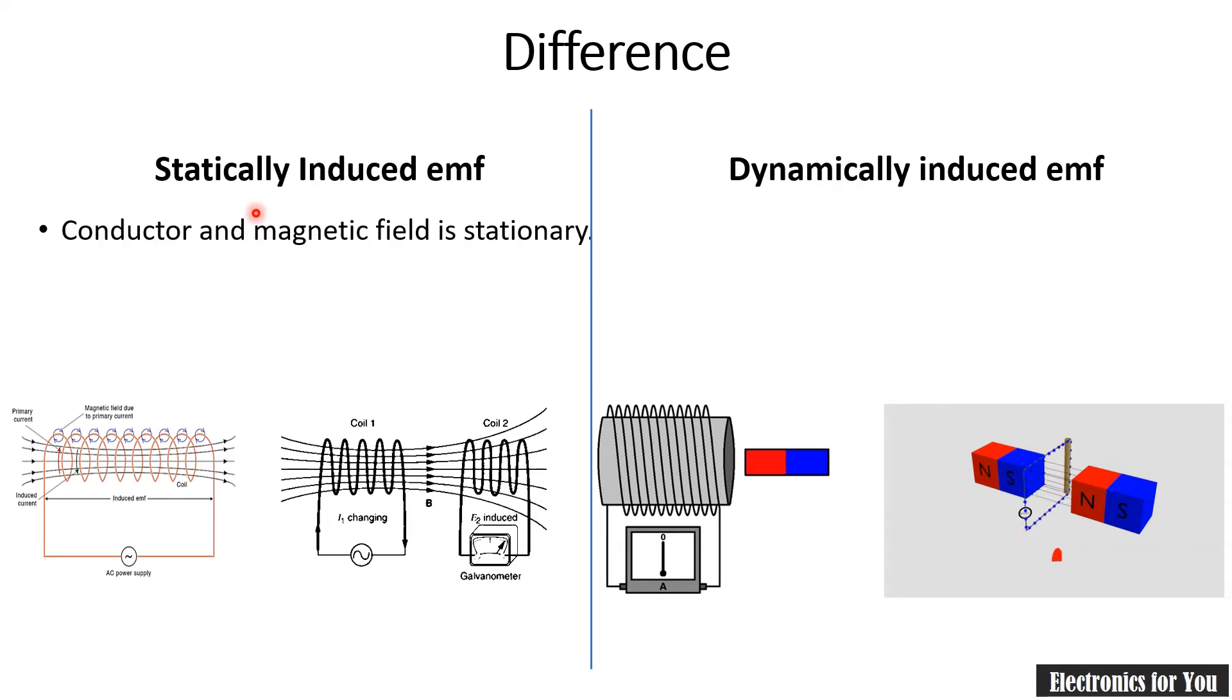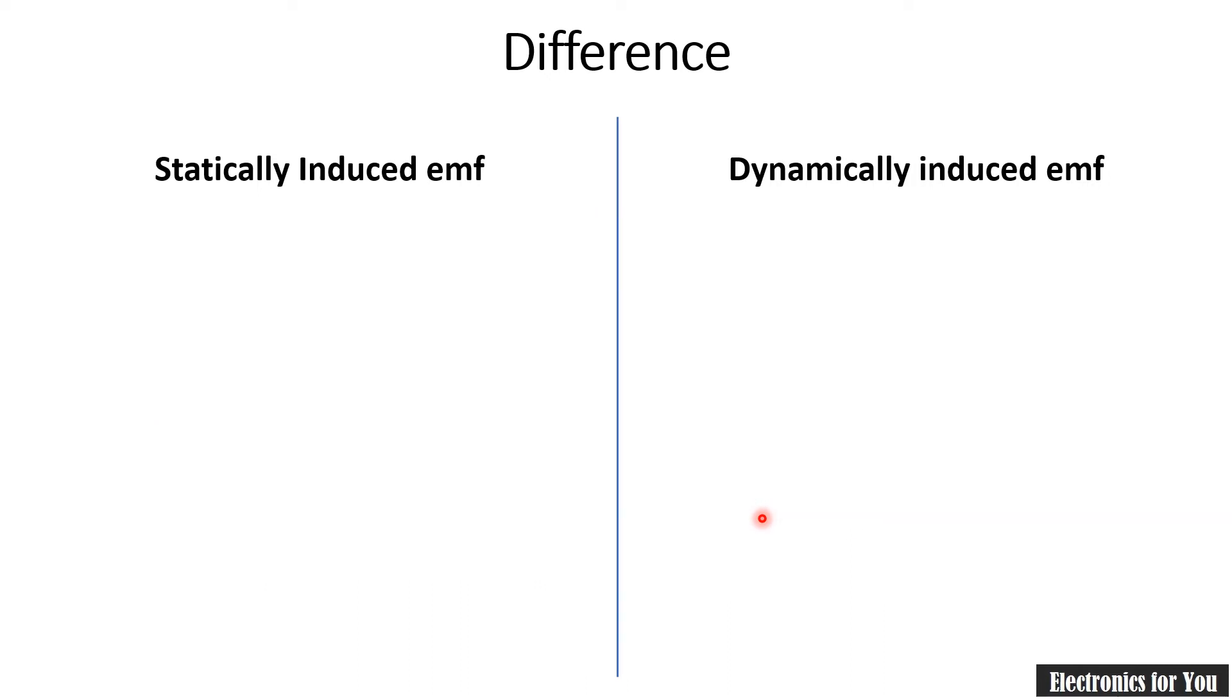The next difference is in statically induced EMF, the conductor and magnetic field are stationary. As you can see here, there is no movement in the conductor or magnetic field, whereas in dynamically induced EMF either conductor is in motion or the magnetic field is in motion.